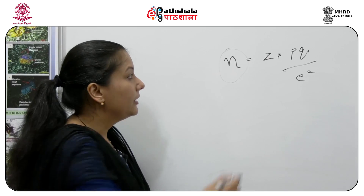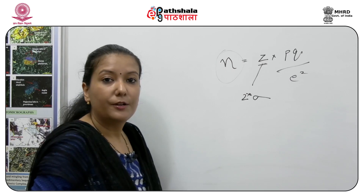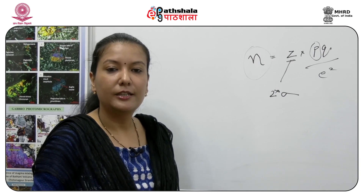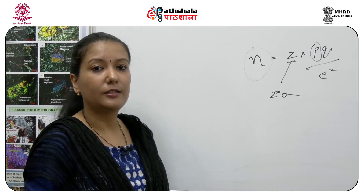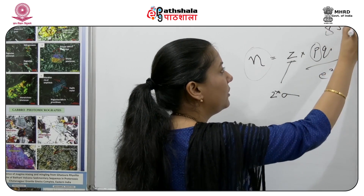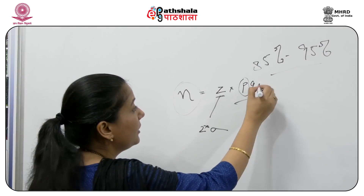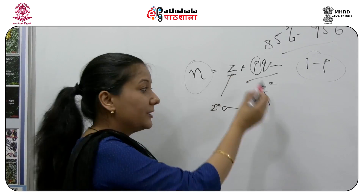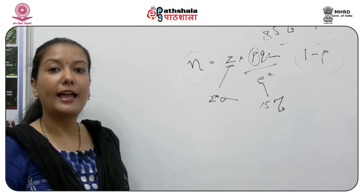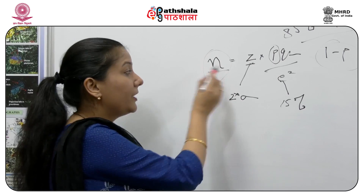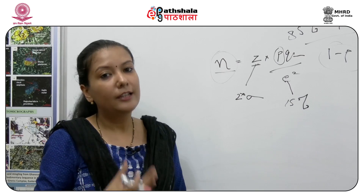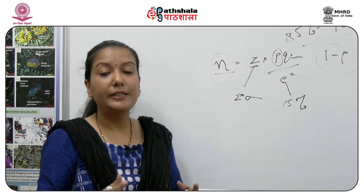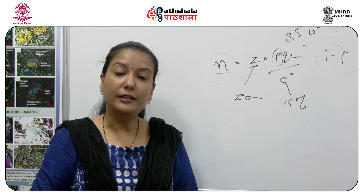In this formula, z relates to the standard deviation of the number of samples, p is the expected accuracy — you will never get 100% accuracy, so you aim for maybe 85 to 95% — q is 1 minus p, and e² is your allowable error. So if your expected accuracy is 85%, your allowable error is 15%. In this way you can calculate the average number of samples required for an accuracy assessment. If this number is very large and you do not have the resources, you can minimize or optimize the number of samples required in each class.